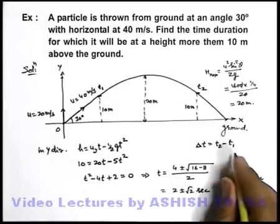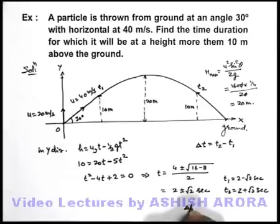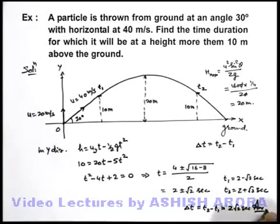So here when we substitute the values we will get the time for which it was above the 10 meter height, that will be t2 minus t1. This will be 2 root 2 seconds. So this will be the answer to the question.